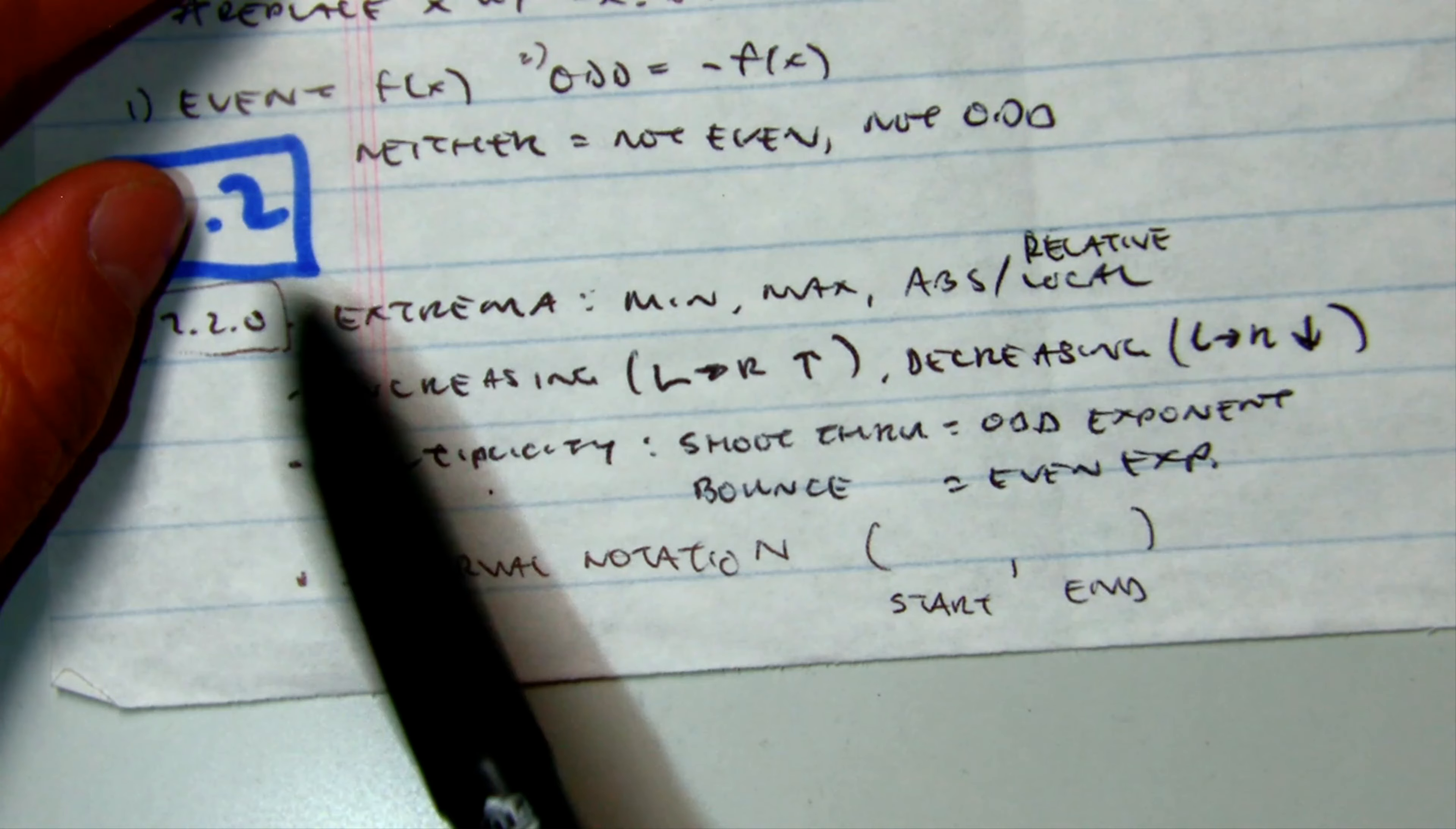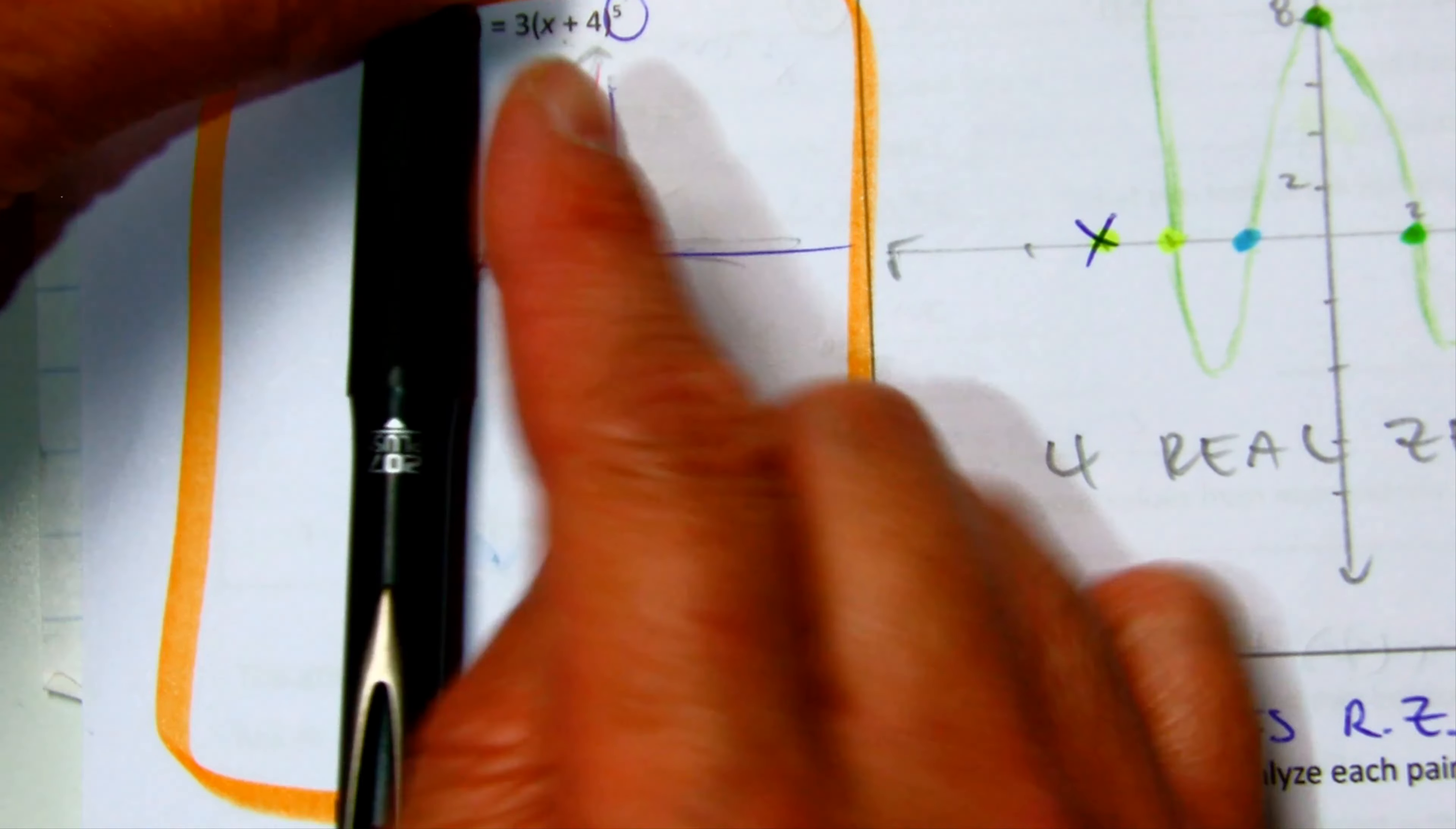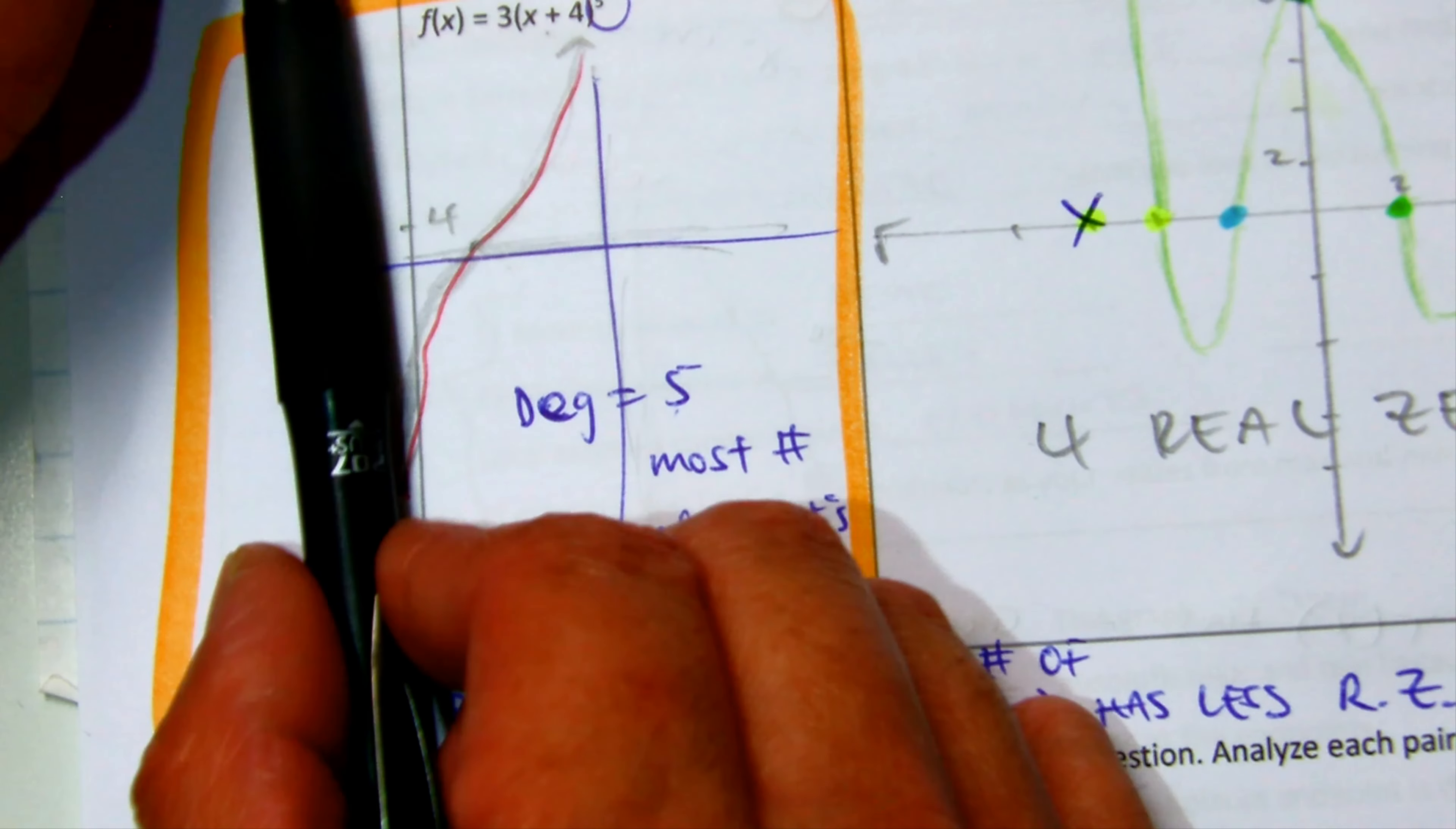Increasing and decreasing functions, you'll go from left to right. So this graph right here is increasing from, let's say that's negative 4 to infinity and it's decreasing from, no, it's always increasing on this one.